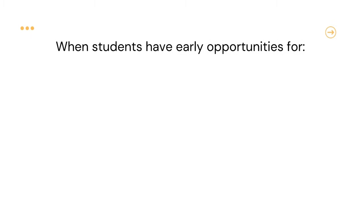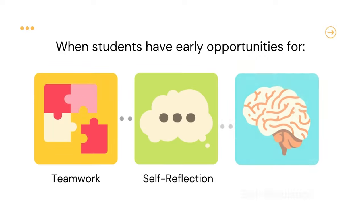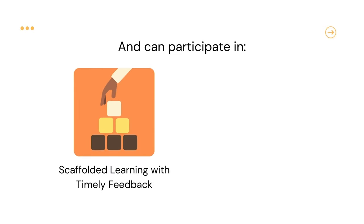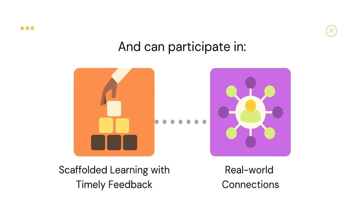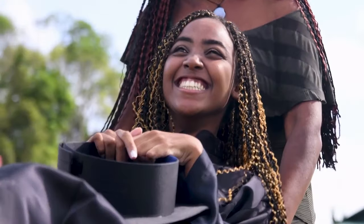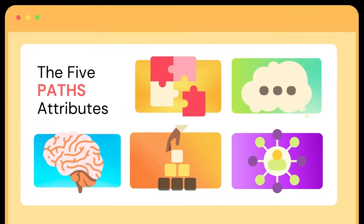When students have early and supported opportunities to engage in teamwork, practice self-reflection with self-regulation, participate in scaffolded learning and receive timely feedback, and make connections between their coursework and the real world, they are more likely to experience success in their university degree. These opportunities are what we call the Five PATHS Attributes.